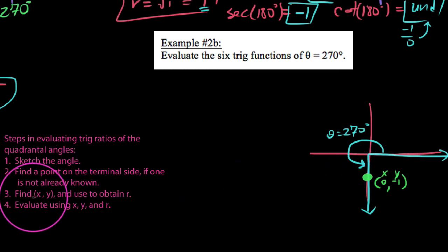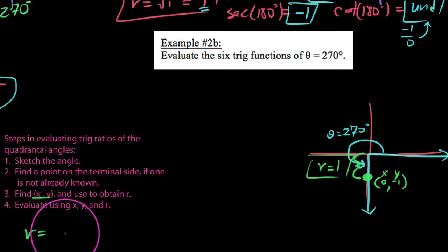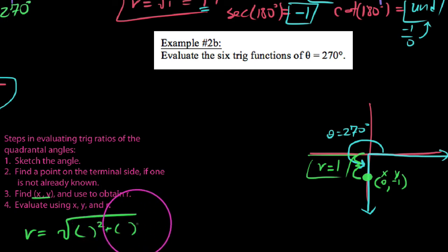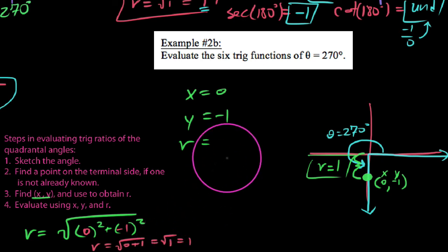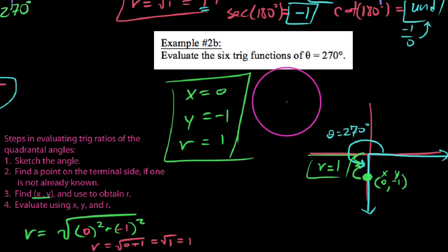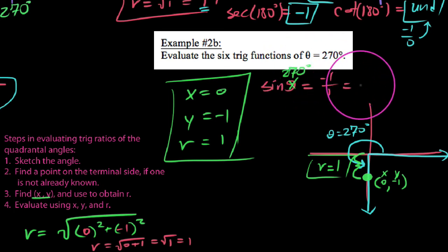We now have x equals zero and y equals negative one. Using the Pythagorean theorem, r equals the square root of x squared plus y squared: zero squared plus negative one squared gives the square root of one. Since r is always positive, r equals one. To find sine of 270 degrees using y over r: y is negative one, r is one, so sine of 270 degrees equals negative one.